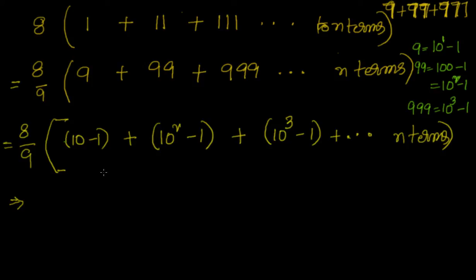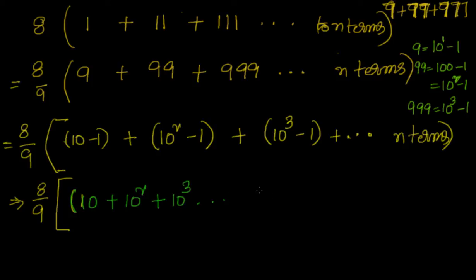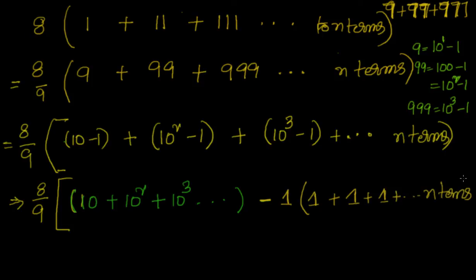That's why I said it is related to geometric progression but may not be straightforward. Now we will separate the terms which are geometric progression. So I will write it as: 10 plus 10 squared plus 10 cubed — those GP terms — minus 1 plus 1 plus 1, that is 1 repeated n times.